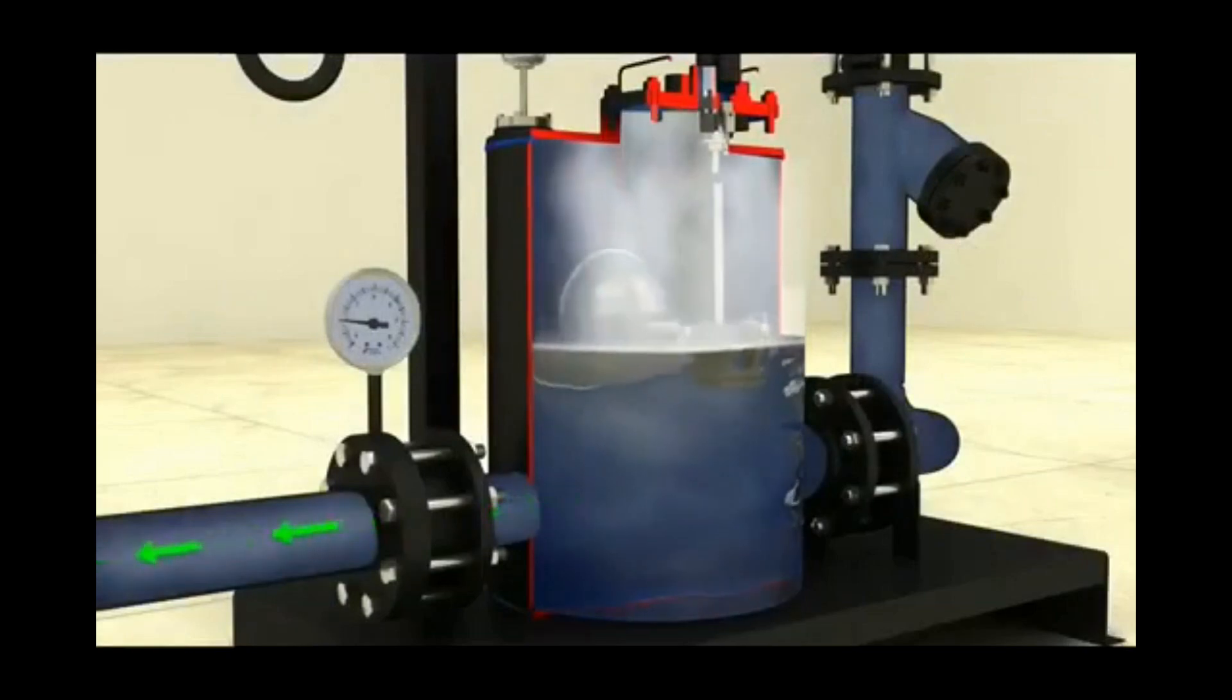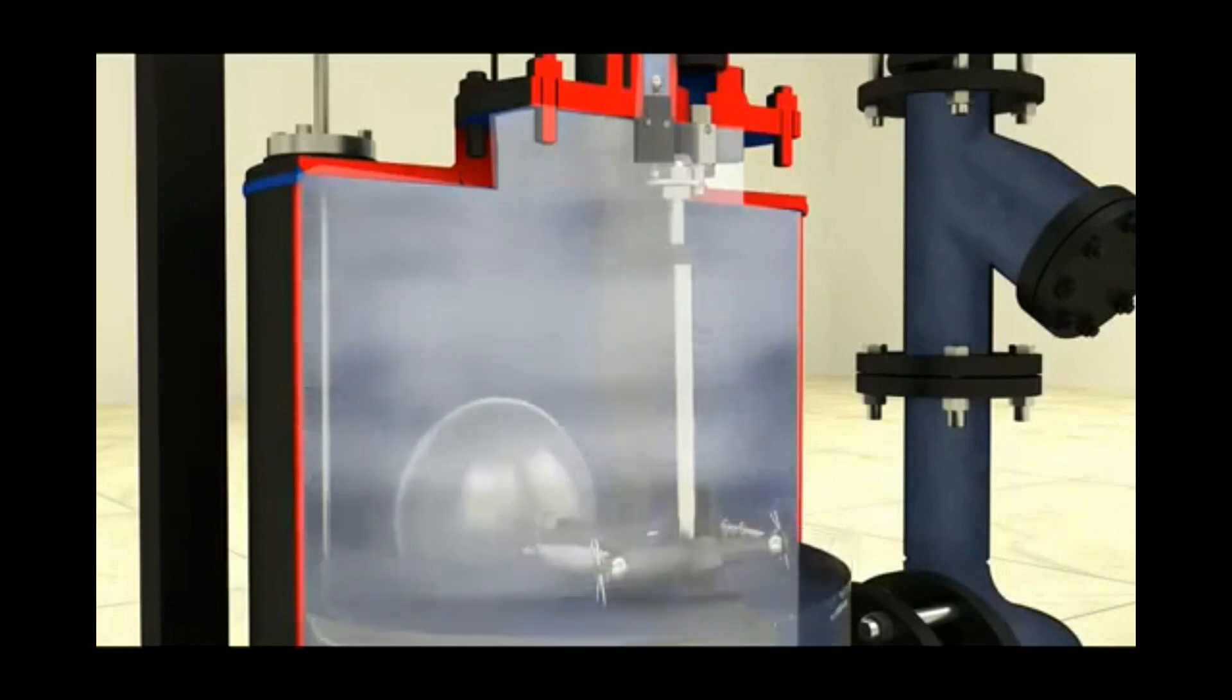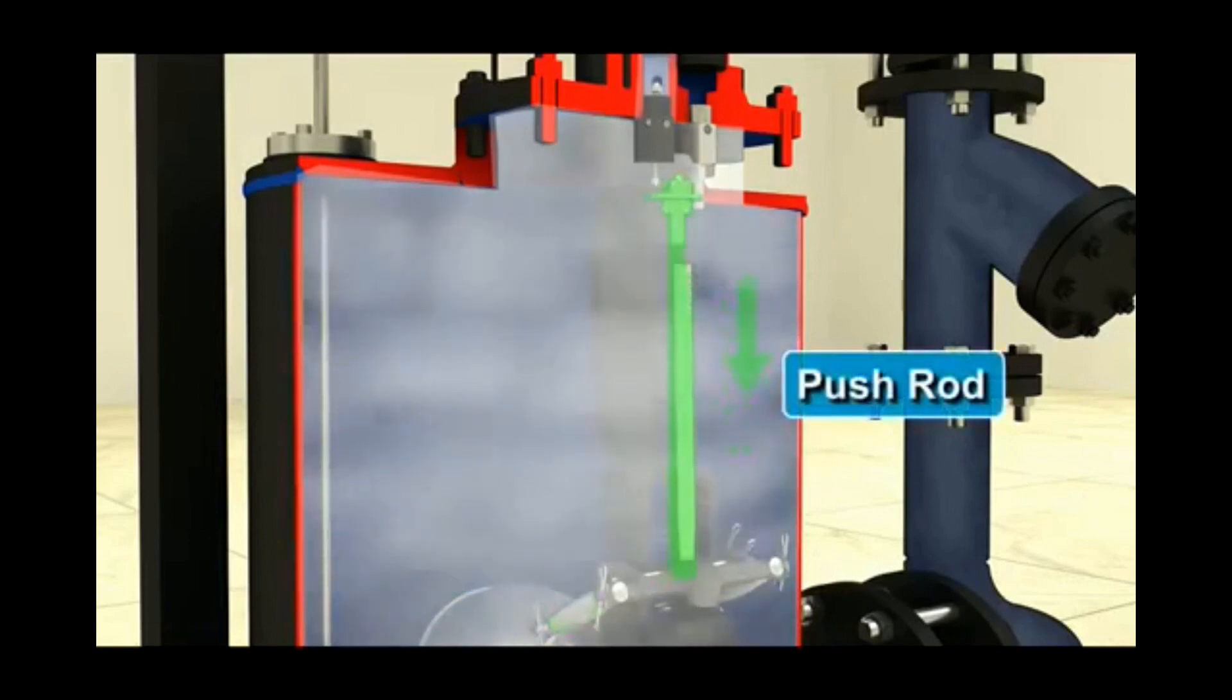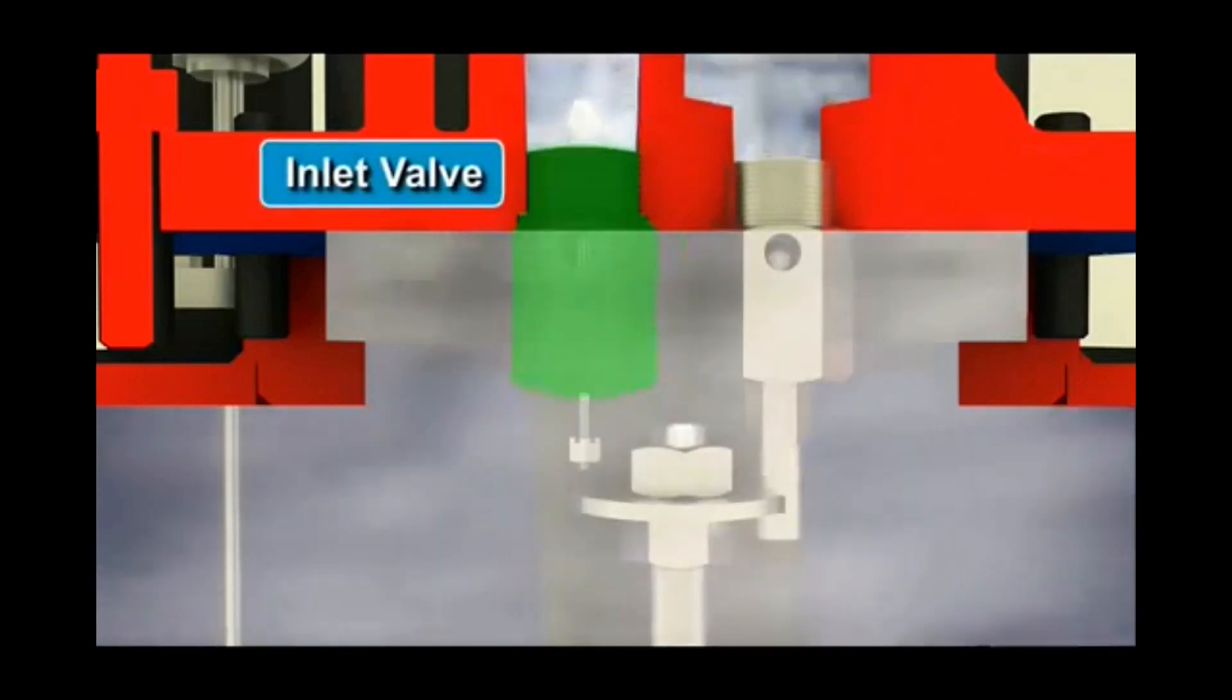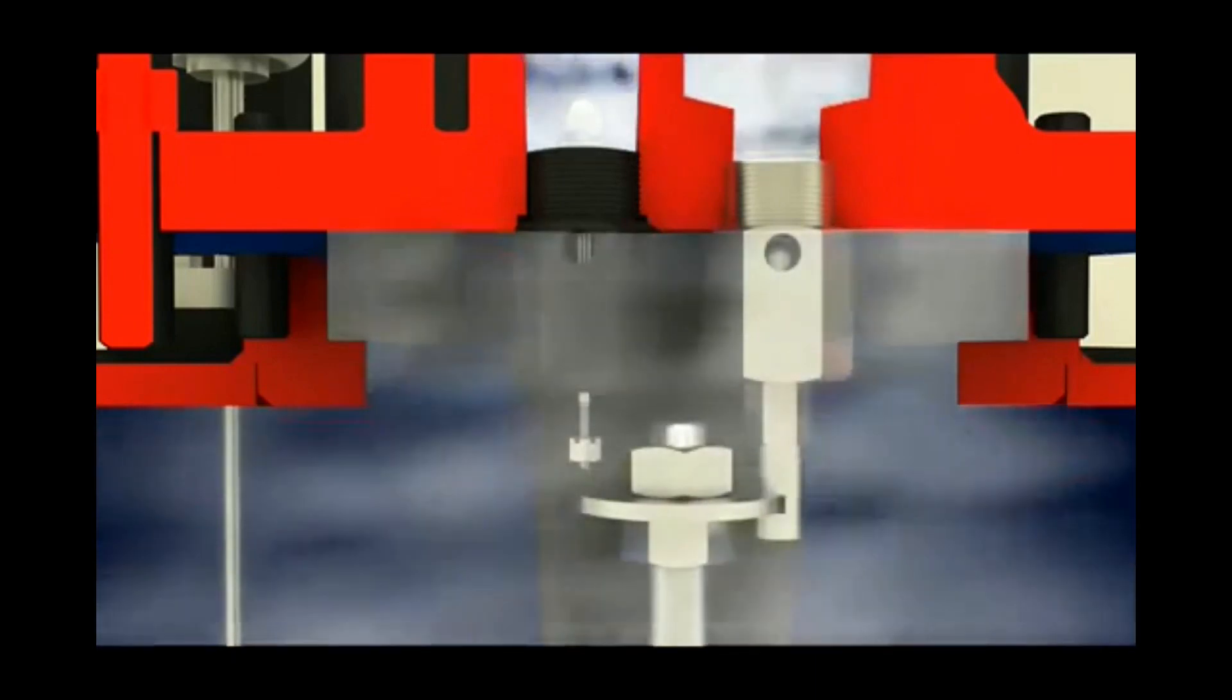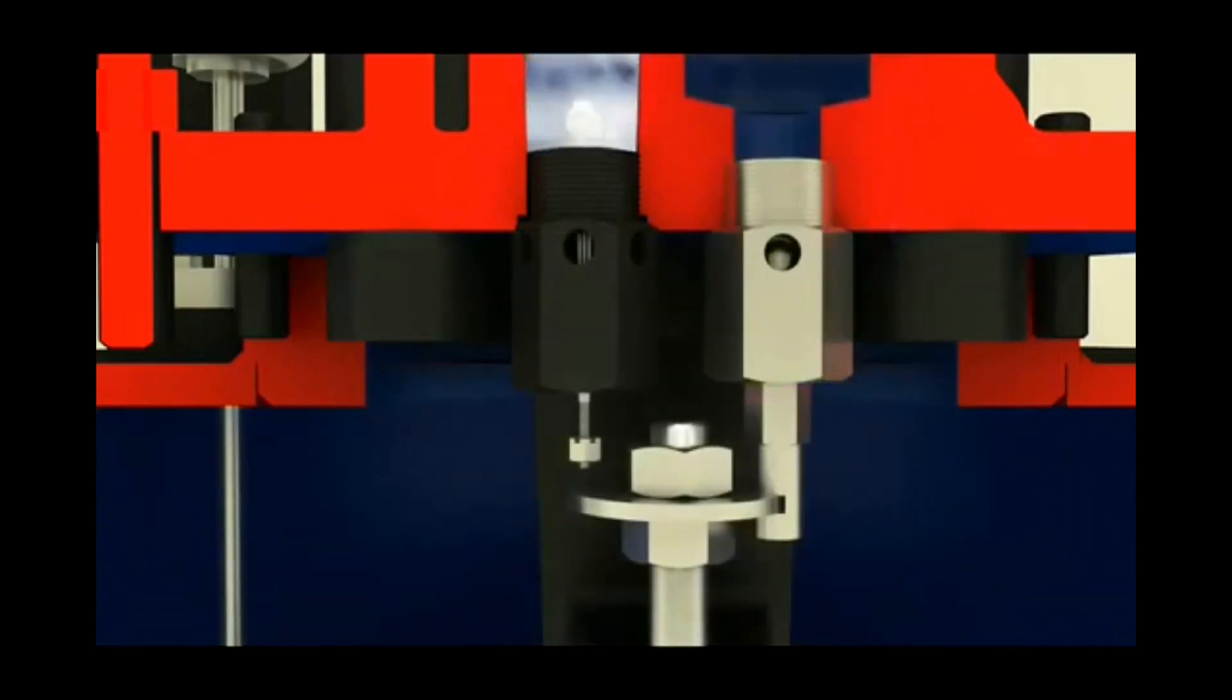When the float reaches the lower tripping position, the linkage mechanism snaps downward over center. The energy in the springs is released as the push rod is moved downward to simultaneously open the exhaust valve and close the steam inlet valve. Steam or air utilized for pumping the condensate gets released through exhaust valve and this completes one pumping cycle.